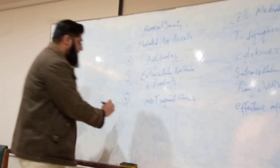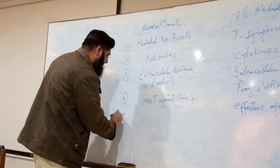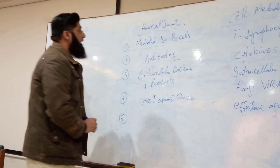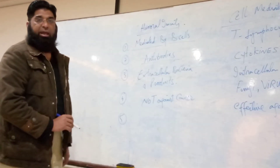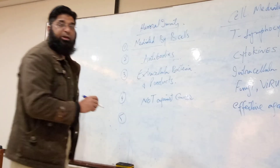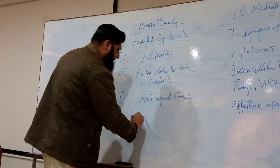Number five: humoral immunity is rapid in onset.